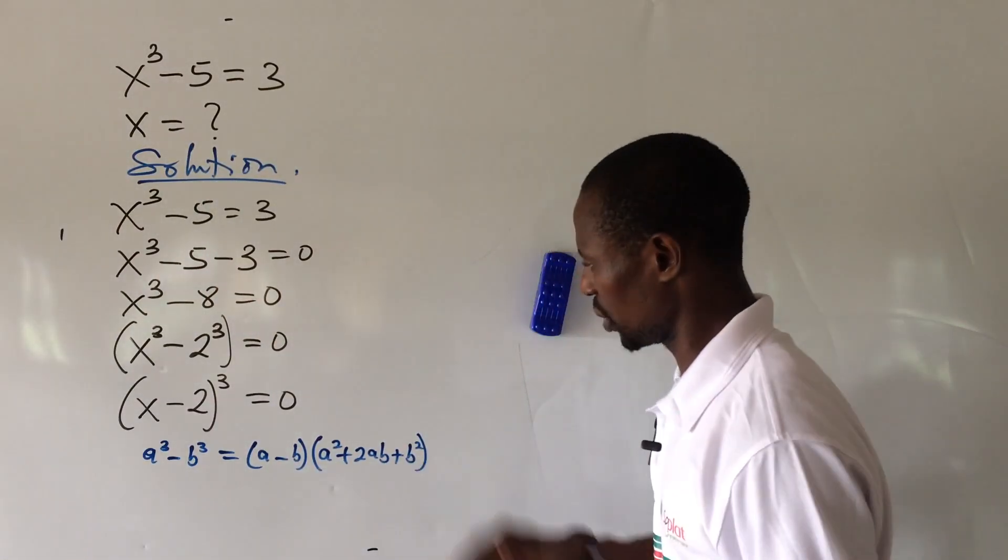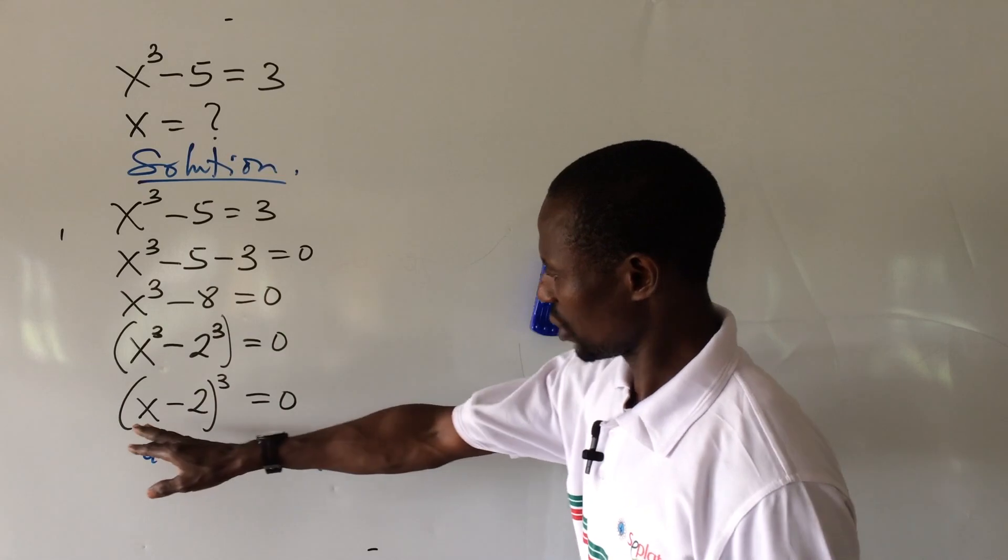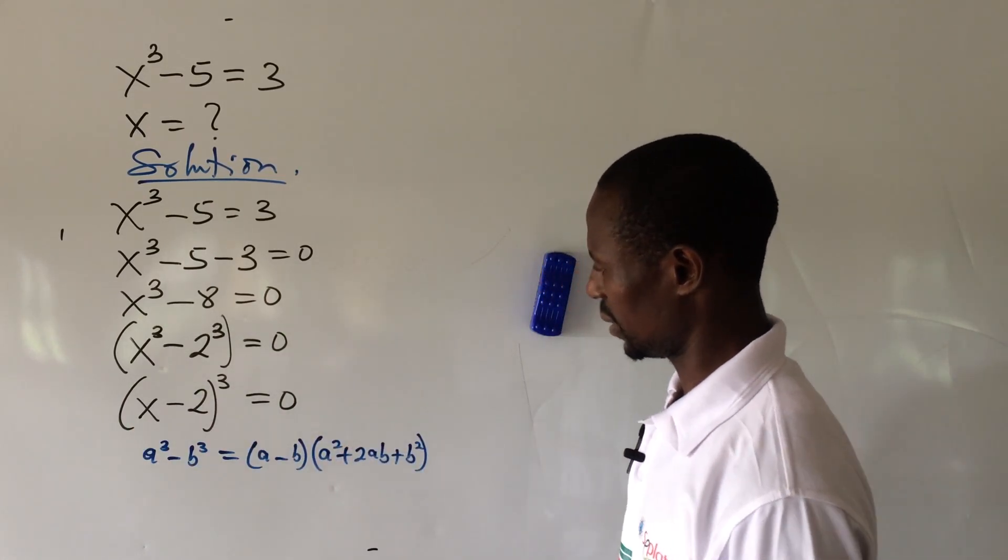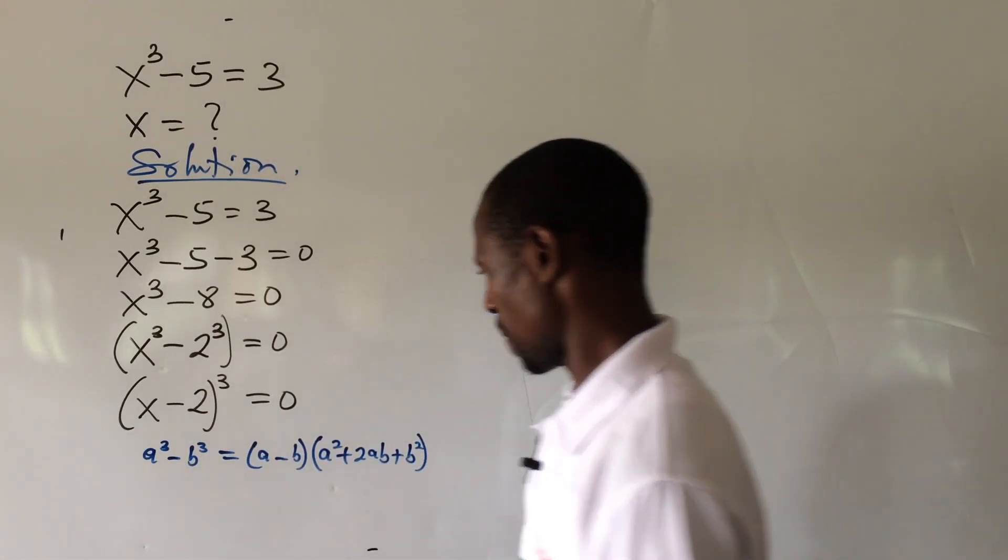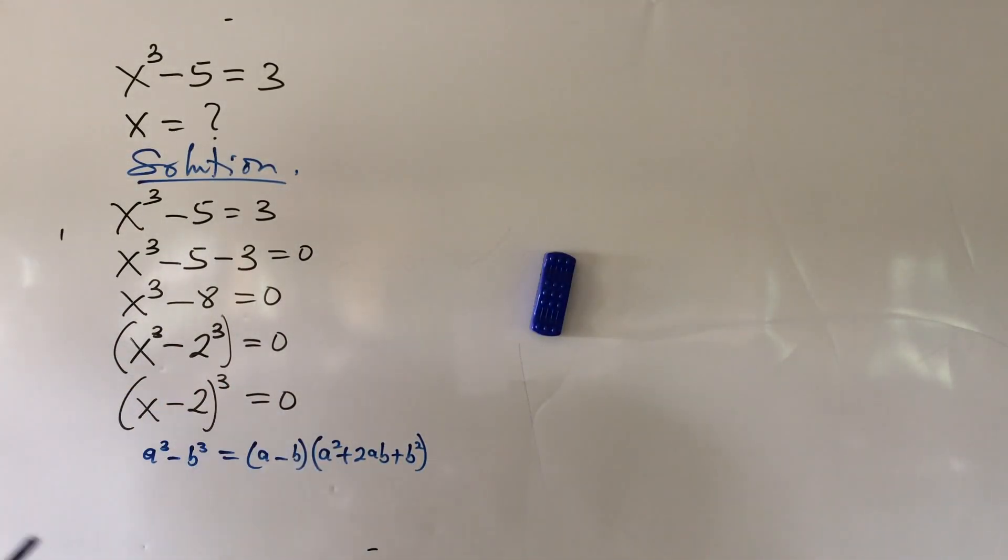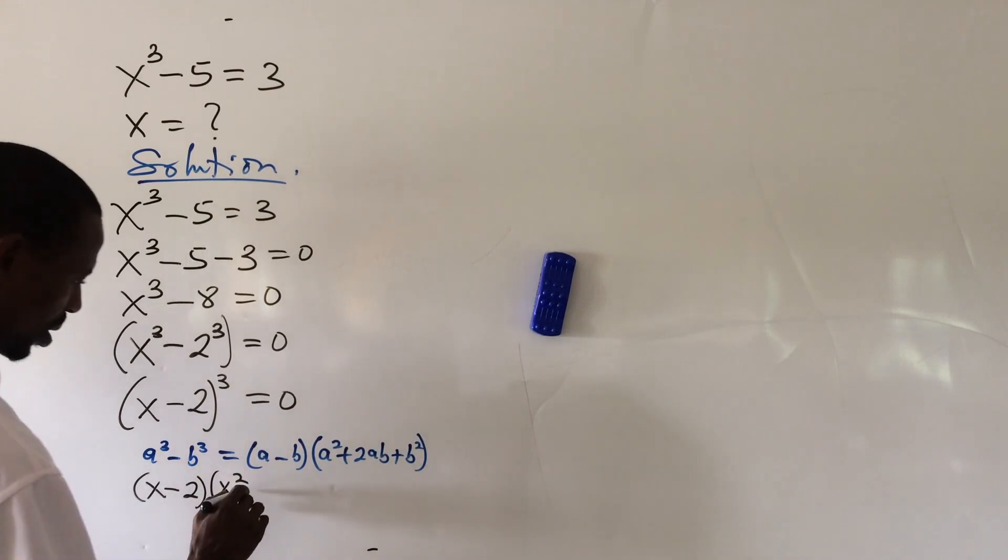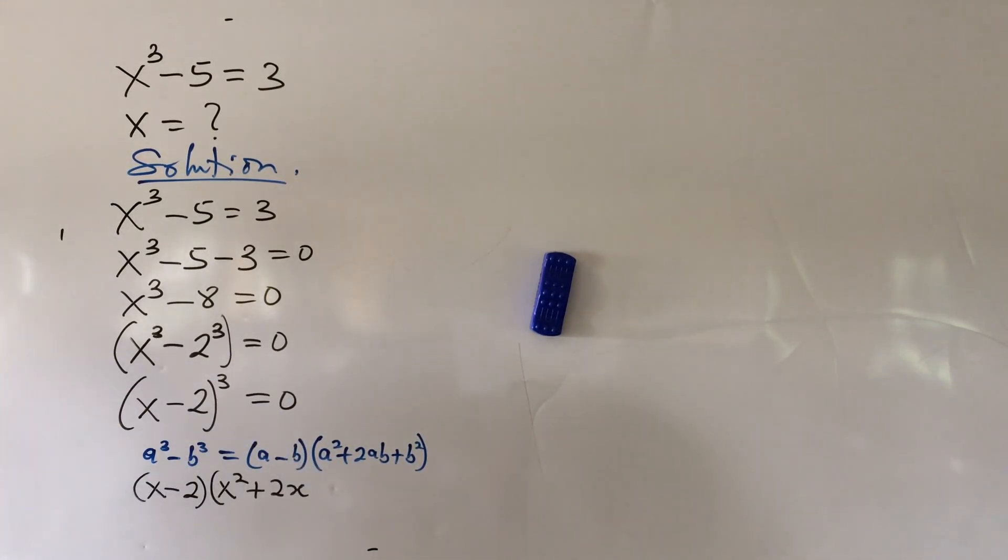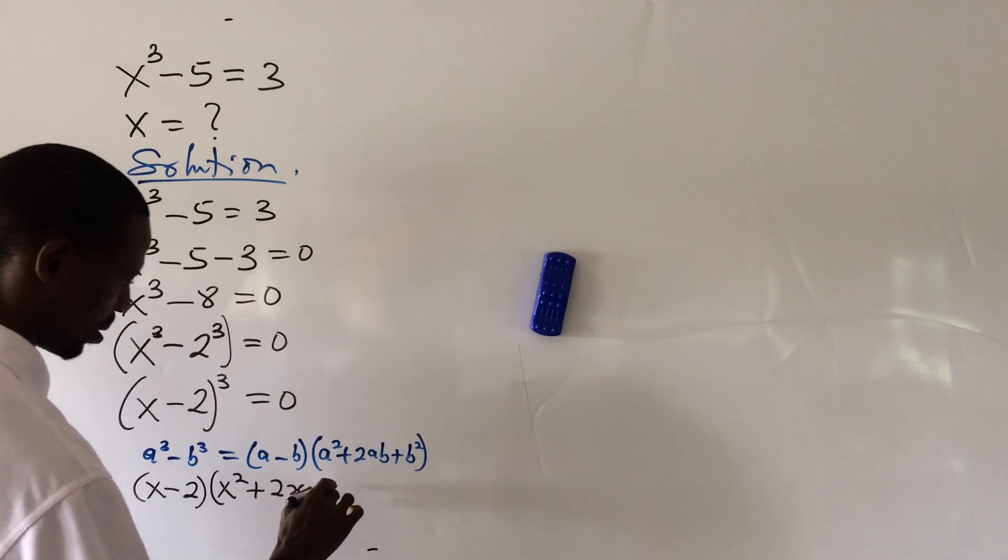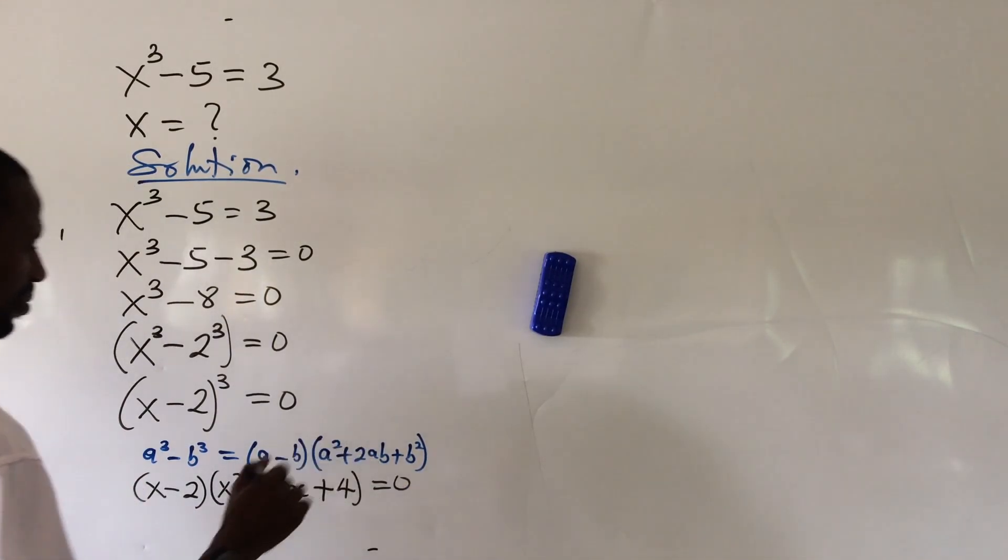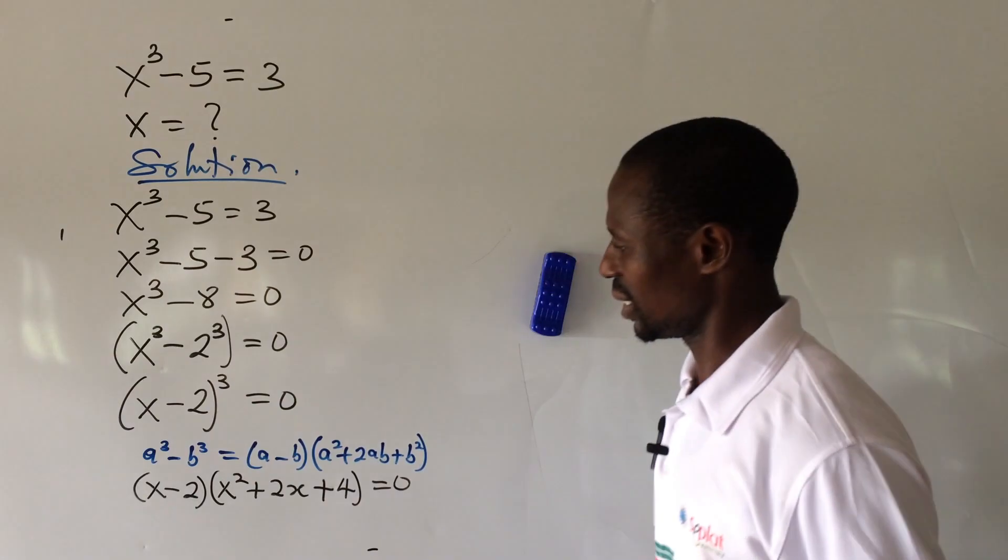So if we succumb to this rule, then we can also express this in this format. So from here, let's proceed. If we bring out this format, this will give us something like this: bracket open x minus 2 close bracket, then bracket x to the power of 2 plus 2x plus 4 or equal to 0.